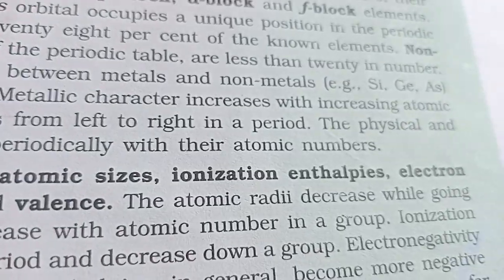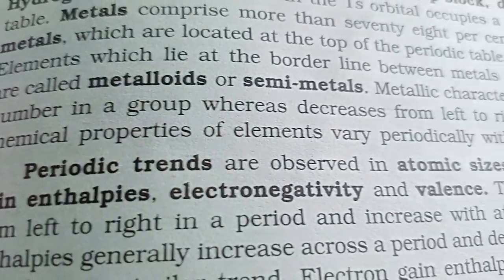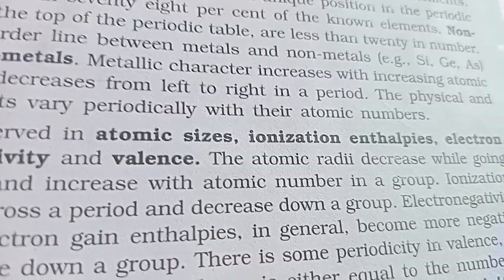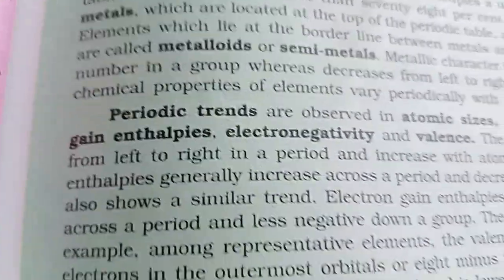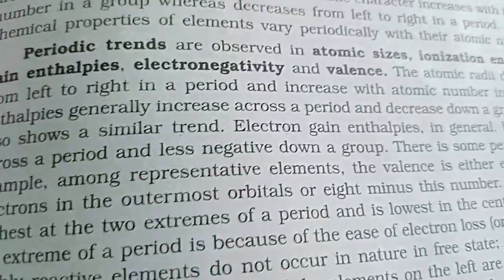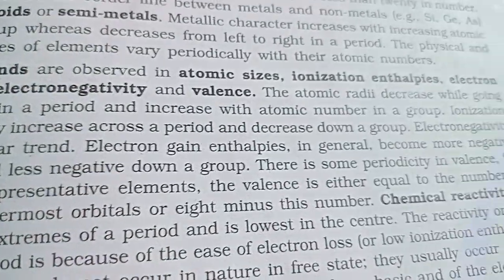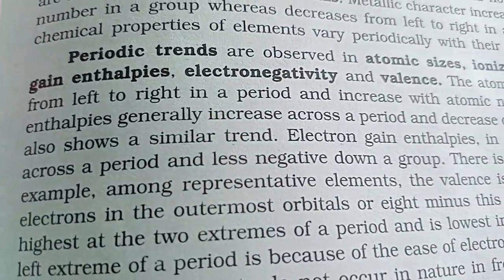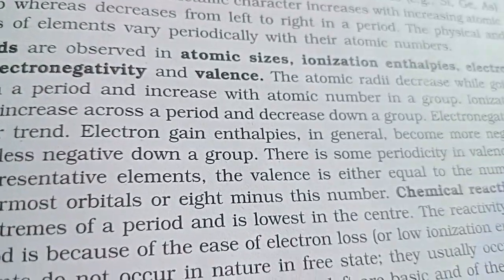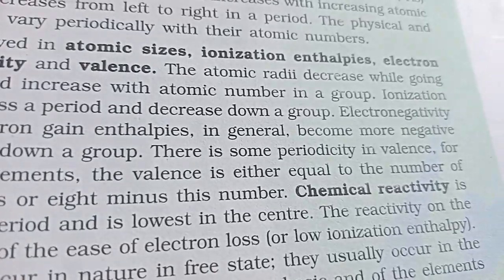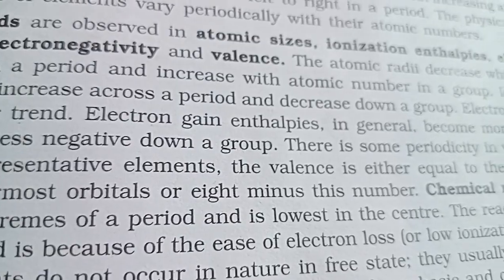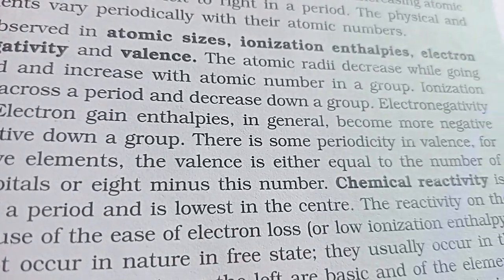Metallic character increases with increasing atomic number in a group, whereas it decreases from left to right in a period. The physical and chemical properties of elements vary periodically with their atomic numbers. Periodic trends are observed in atomic sizes, ionization enthalpies, electron gain enthalpy, electronegativity, and valency. The atomic radii decrease while going from left to right in a period and increase with atomic number in a group. Ionization enthalpy generally increases across a period and decreases down a group.